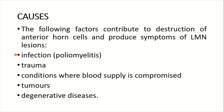Now a brief discussion of the lower motor neuron lesions. The factors causing lower motor neuron lesions destroy the anterior horn cells and produce symptoms of lower motor neuron lesions. These include viral infection such as poliomyelitis, trauma, conditions where blood supply to these cells is compromised, tumors such as carcinoma, and degenerative diseases.